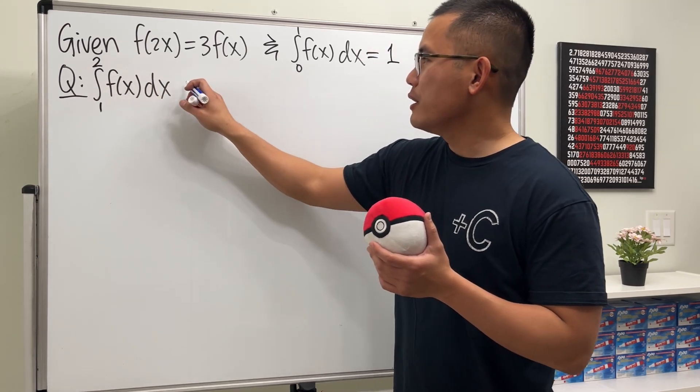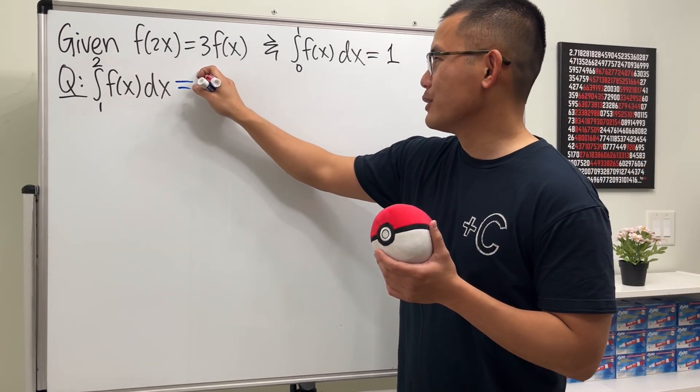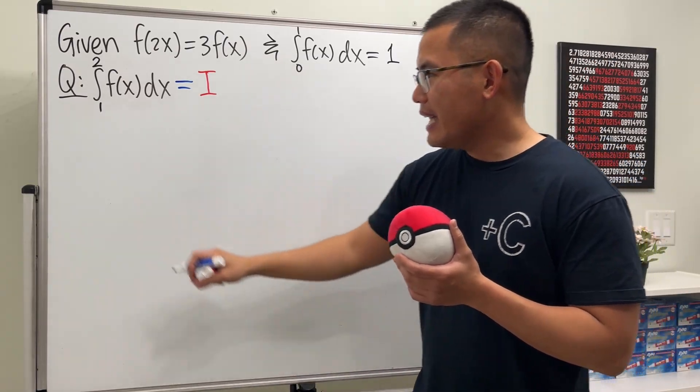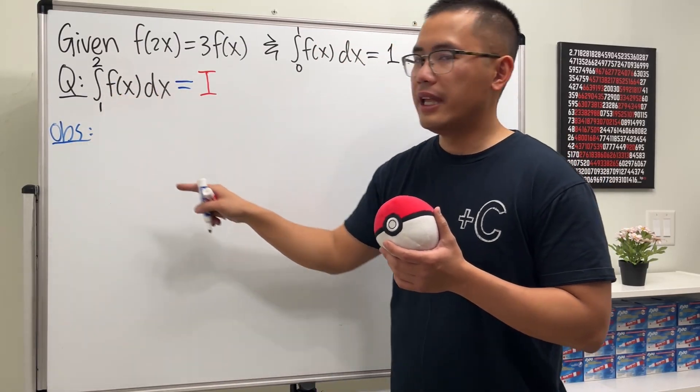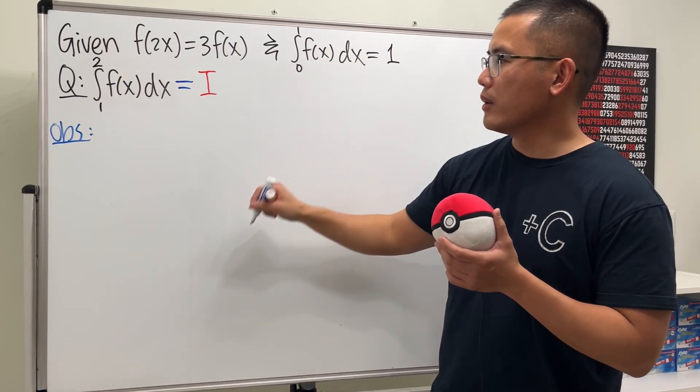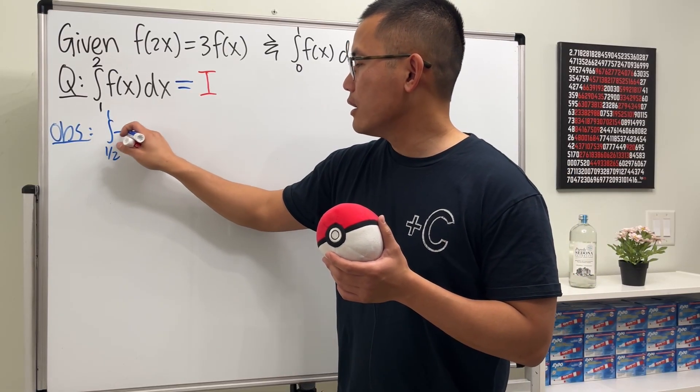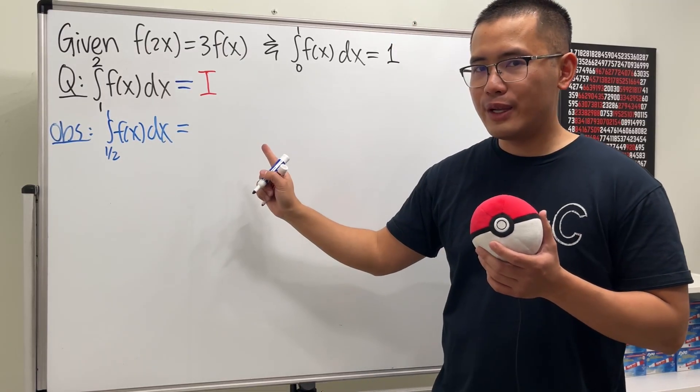Right here, they started by calling this to be s. But I don't like to use s because my s looks like a 5. So let's use i for integral. And then we are going to make some observations. Not the integral going from 1 to 2 and not the integral going from 0 to 1, though. But rather, the integral going from 1 half to 1 of the function f of x.